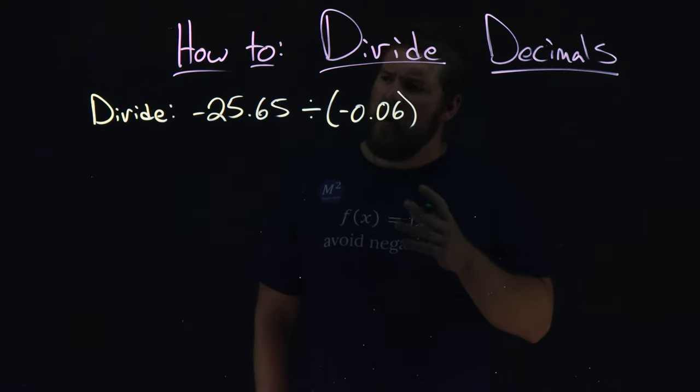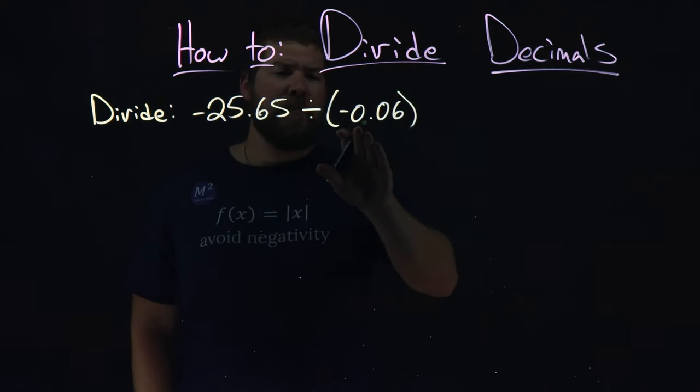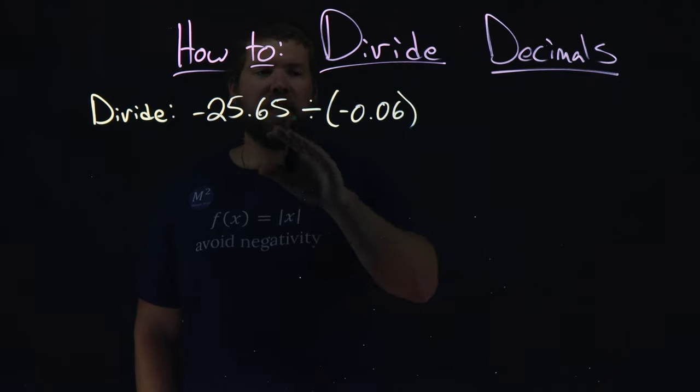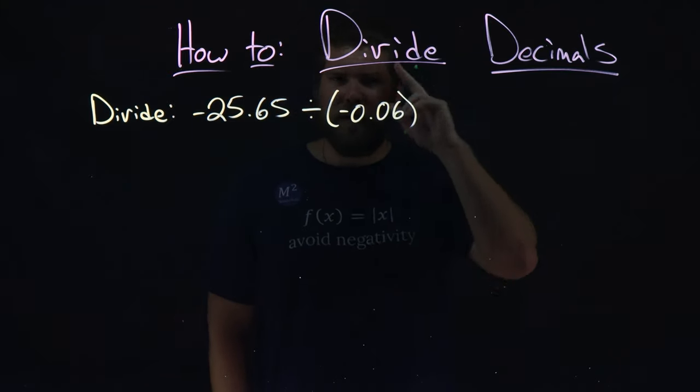I'm going to simplify this. We're dividing two negative numbers, which means our result will be positive. A negative divided by a negative is a positive.